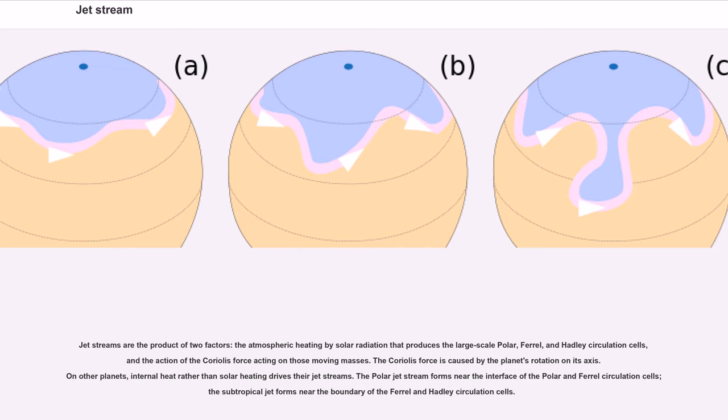Jet streams are the product of two factors: atmospheric heating by solar radiation that produces the large-scale polar, Ferrel, and Hadley circulation cells, and the action of the Coriolis force acting on those moving masses. The Coriolis force is caused by the planet's rotation on its axis. The polar jet stream forms near the interface of the polar and Ferrel circulation cells, and the subtropical jet forms near the boundary of the Ferrel and Hadley circulation cells.